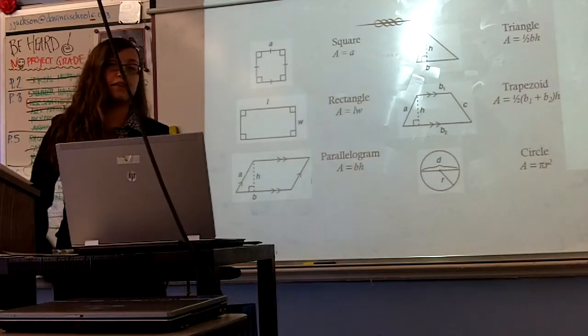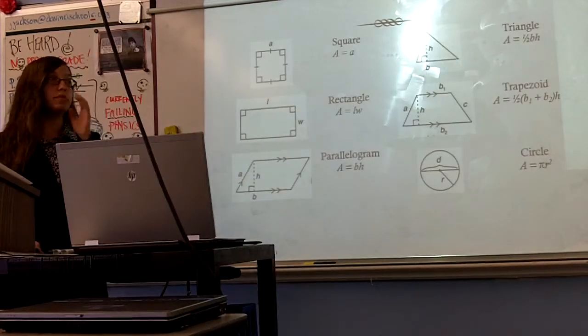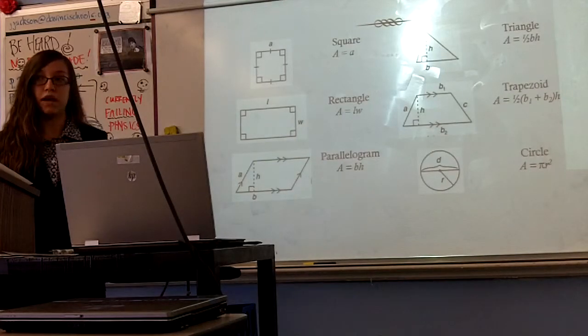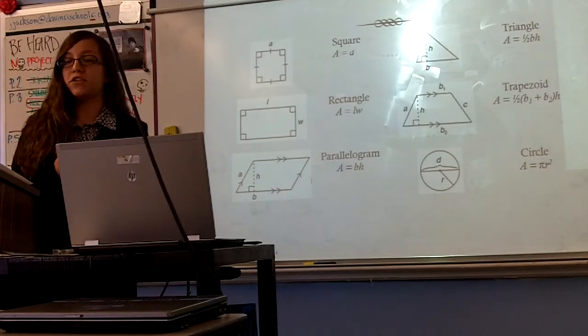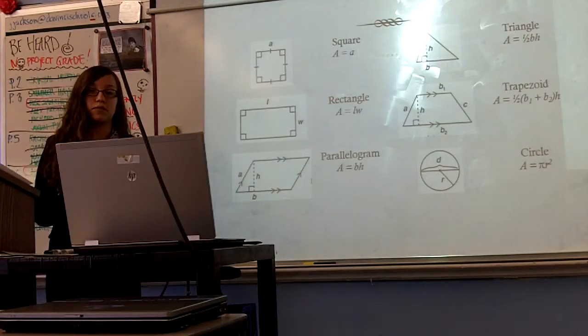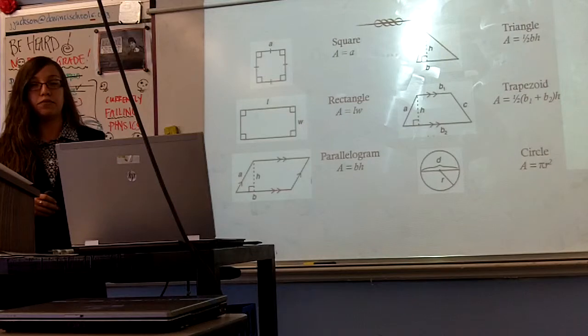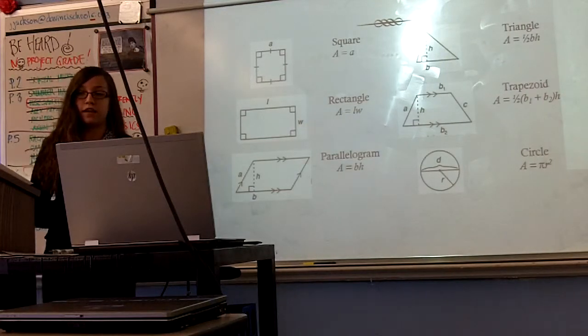Now for area, things are a little less straightforward than perimeter. Whereas perimeter is one-dimensional and is measured in linear units like inches, meters, and miles, area is two-dimensional and instead is measured in square units like square inches, square meters, and square miles. If perimeter is the length of fence we have surrounding our garden, area is the size of the garden we have inside.